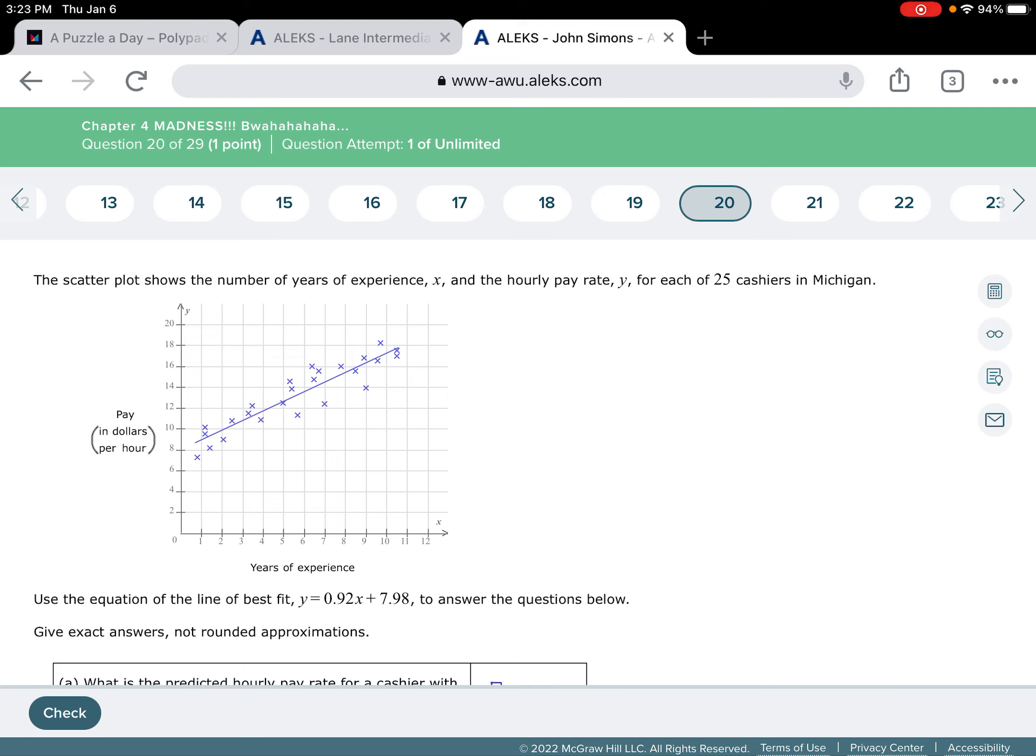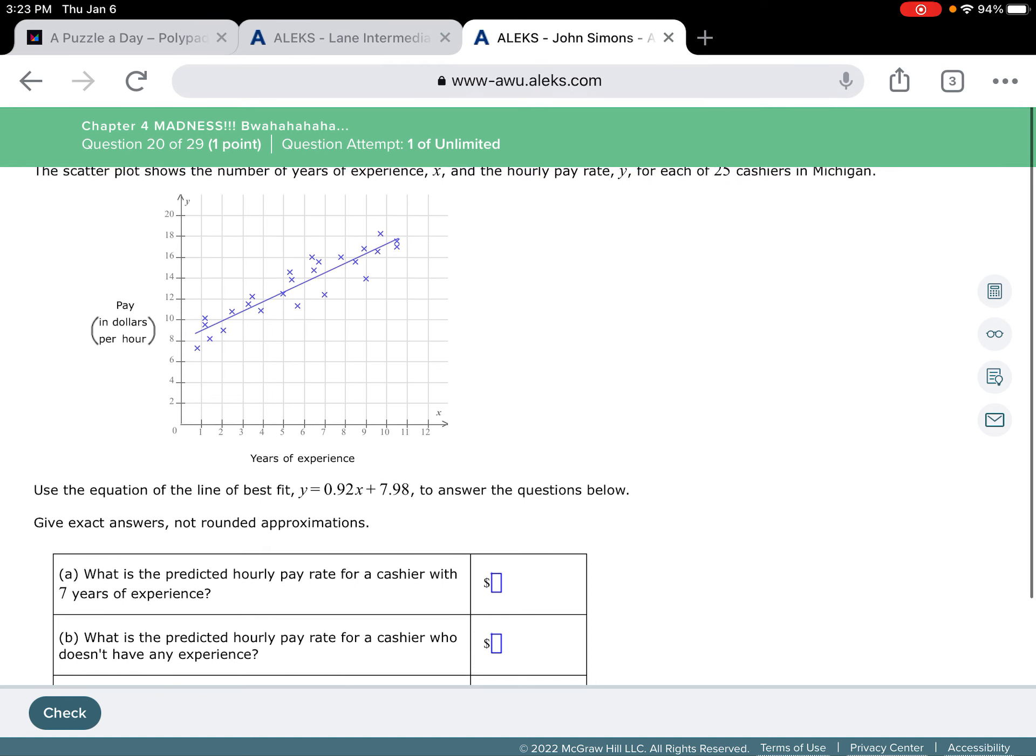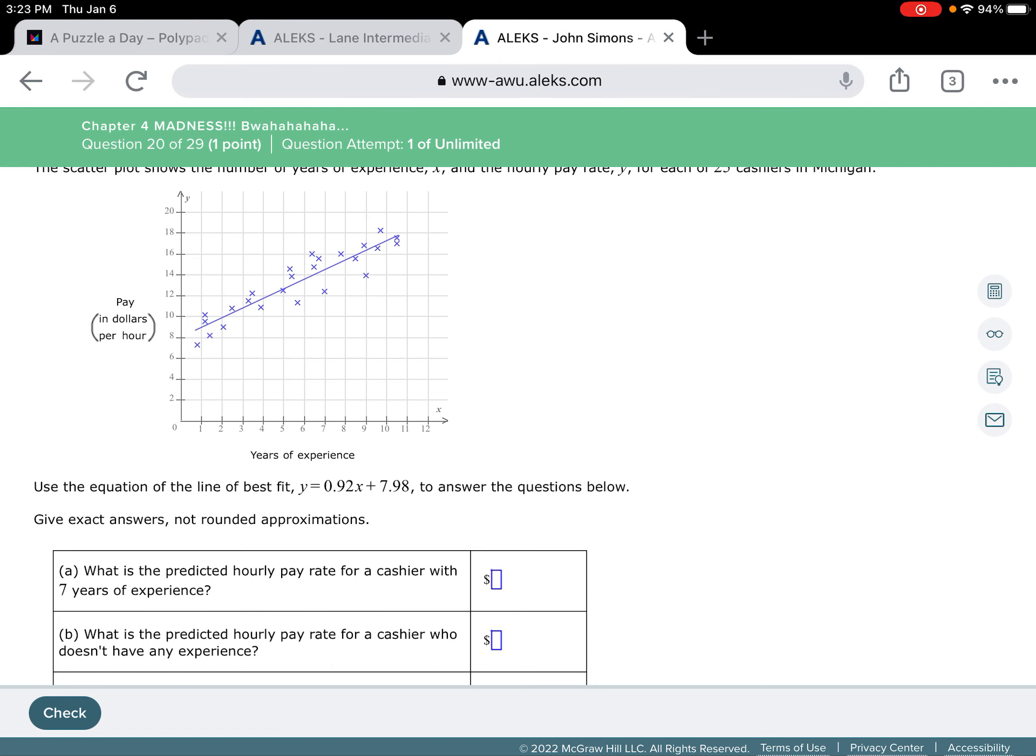And it says then below that, use the equation of the line of best fit, Y equals 0.92X plus 7.98 to answer the questions below. Give exact answers, not rounded approximations. So the first question is, what is the predicted hourly rate for a cashier with seven years of experience? So what you want to do is you want to go on the X-axis, and you would look at that. And you would follow that up, and we can see it's going to be like 14-something or so an hour.